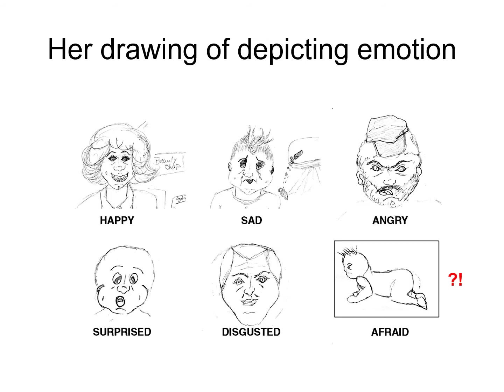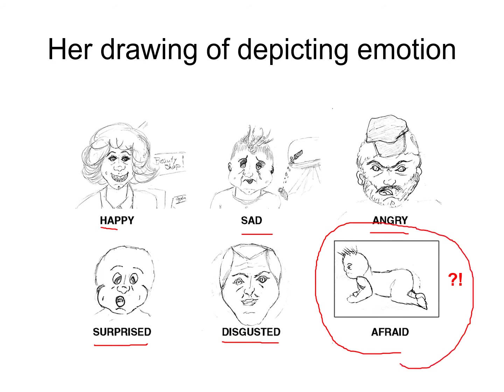Much of this is due to her atrophy of the amygdala. When asked to draw emotions, SM could draw a happy face, sad face, angry face, surprised face, or disgusted face. But when asked to draw a fearful face, she was unable to — she just drew a picture of a baby. SM completely lost the visual perception of what a fearful facial expression looks like.